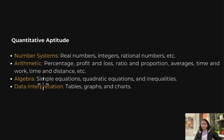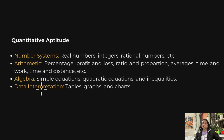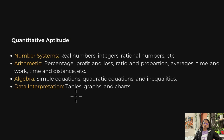In quantitative aptitude there are questions from number systems, arithmetic, algebra, and data interpretation. In number systems, most questions are based on percentage, profit and loss, ratio and proportion. Algebra involves linear or quadratic equations and inequalities. Data interpretation involves tables, bar graphs, or pie charts — you have to read the data from those tables and graphs to answer the questions.